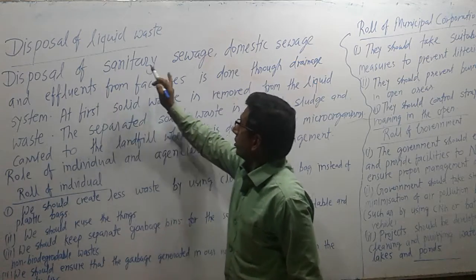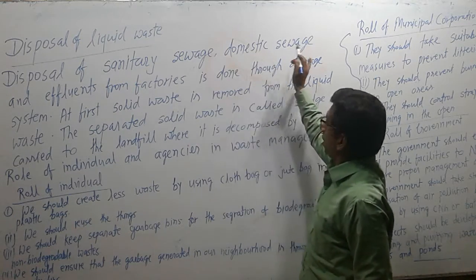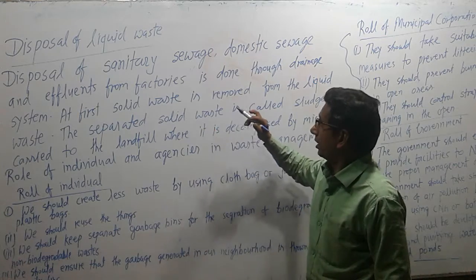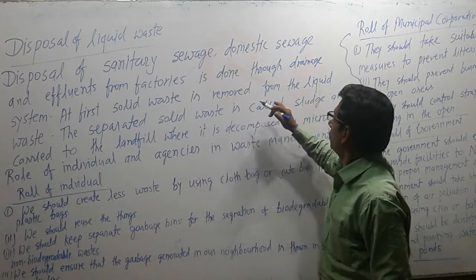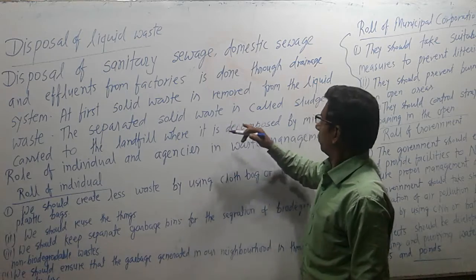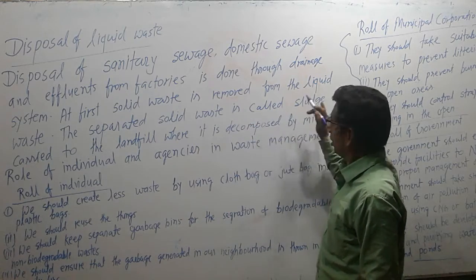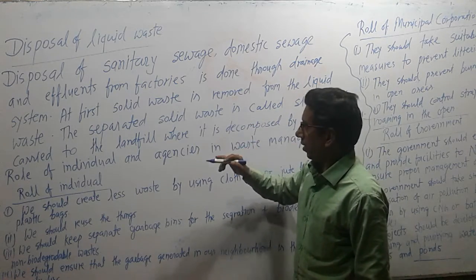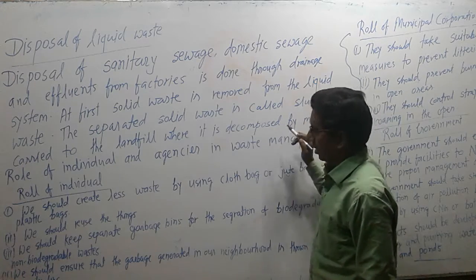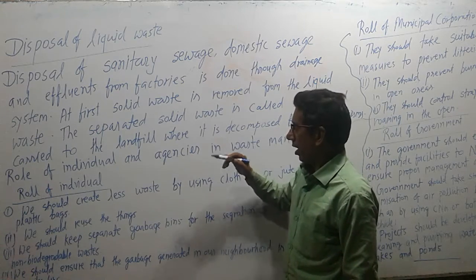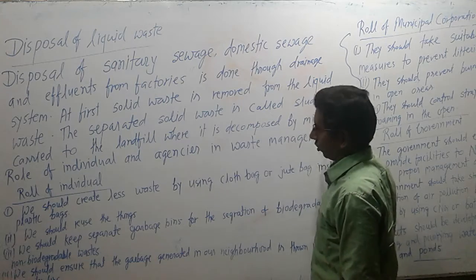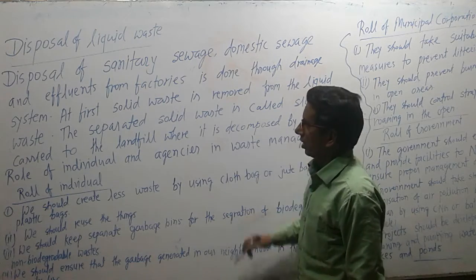Disposal of sanitary sewage, domestic sewage, and effluents from factories is done through the drainage system. At first, solid waste is removed from the liquid waste. The separated solid waste is called slush and is carried to the landfill, where it is decomposed by microorganisms.